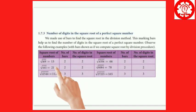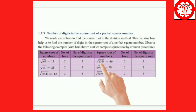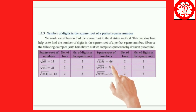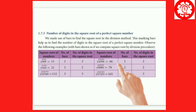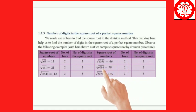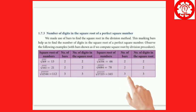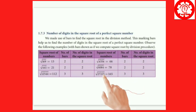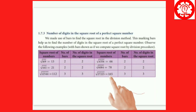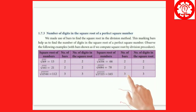Now let's look at more examples. The square root of 4356 is 66 — there are 2 periods, so the number of digits is 2. The square root of 6084 is 78 — there are 4 digits, so the answer is 2. The square root of 27225 is 165 — so we include 3 digits.